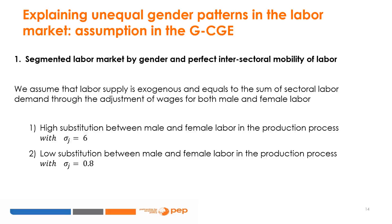Gender decomposition of market work is the first step to explaining unequal gender patterns in the labor market. Even with the simplified approach to incorporate gender dimensions using the CGE methodology, the assumptions on the relationship between male and female labor in the aggregate labor demand function and the constraints linked to labor supply are important determinants of policy outcomes. In this section, we discuss different elasticities of substitution between male and female labor and intersectoral mobility of female labor compared to male labor.